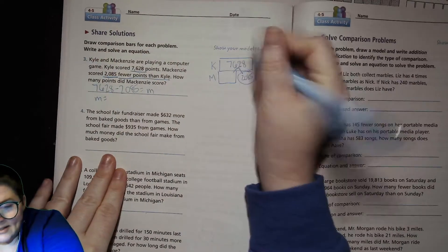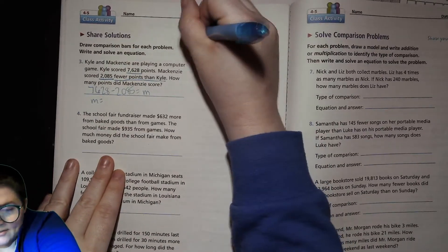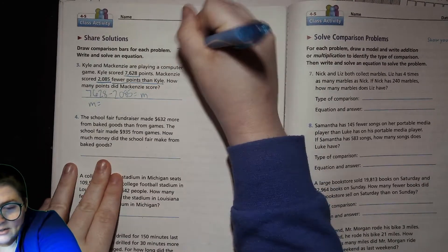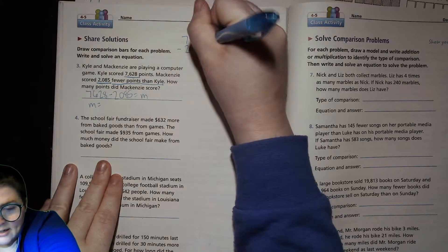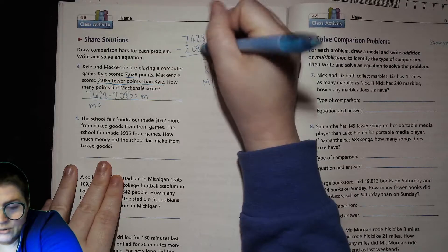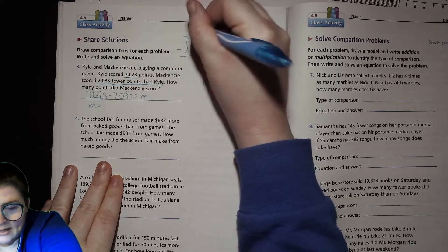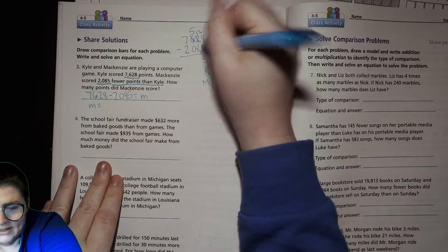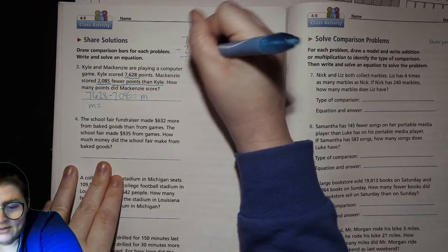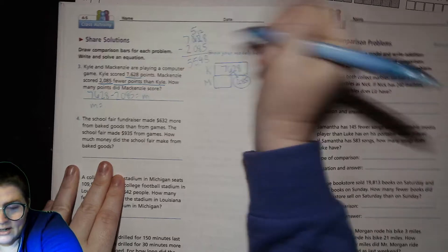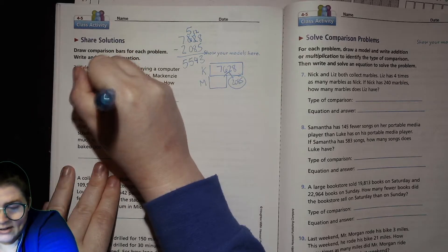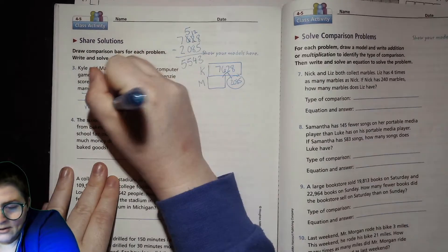To find this we're going to do 7,628 minus 2,085 to get m. Let's go ahead and set that up: 7,628 minus 2,085. 8 minus 5 is 3. 2 minus 8 is not going to work, so we have to ungroup. 12 minus 8 which is 4. 5 minus nothing is 5. 7,000 minus 2,000 is 5,000. So m equals 5,543. Mackenzie's point value was 5,543.